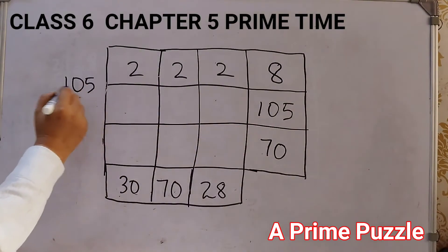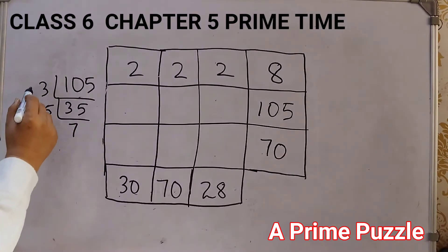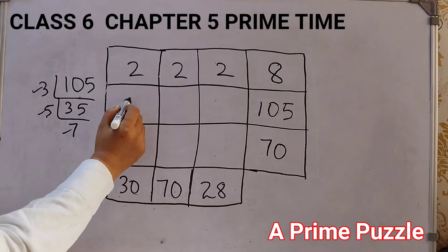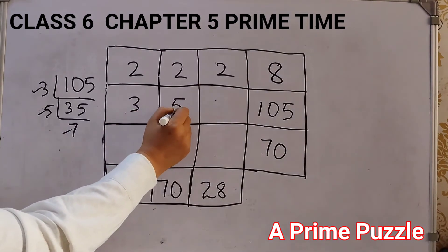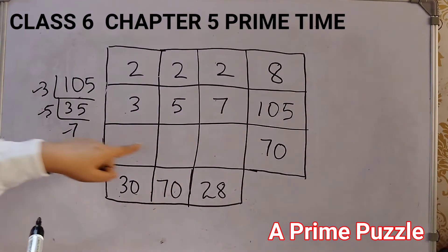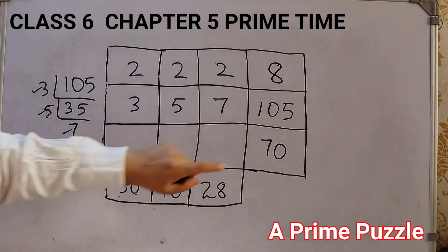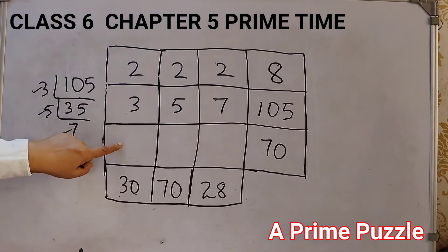105 is divisible by 3. So 3, 3's are 9, from 15, and 5 into 7 is 35. So we can fill it up with 3, 5, 7. Let's do 3 into 5 into 7 is 105. Now let's check what we fill up here.